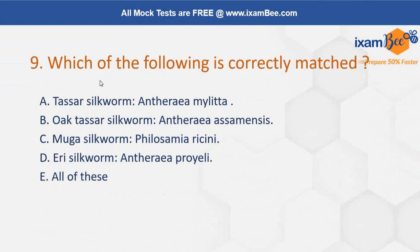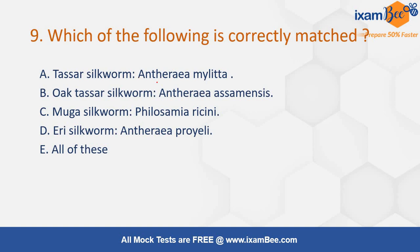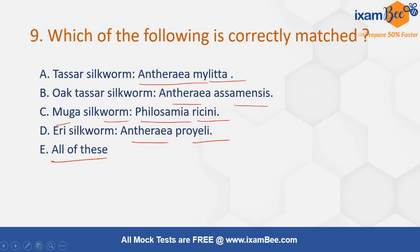The next question is: which of the following is correctly matched? Options are: Tussar silk — Antheraea mylitta; Oak Tussar silkworm — Antheraea assamensis; Muga silkworm — Philosamia ricini; Eri silkworm — Antheraea proylei; or all of these. The correct answer is option A: Tussar silkworm — Antheraea mylitta. The correct full list is: Eri silkworm — Philosamia ricini, Muga silkworm — Antheraea assamensis, Oak Tussar silkworm — Antheraea proylei, and Tussar silkworm — Antheraea mylitta. Since only option A is correctly matched as stated, the answer is A.